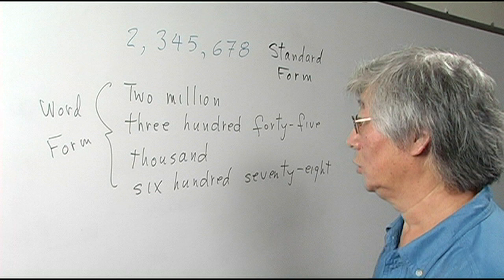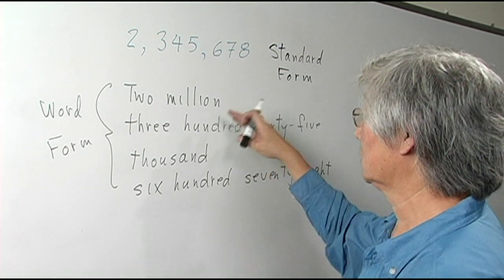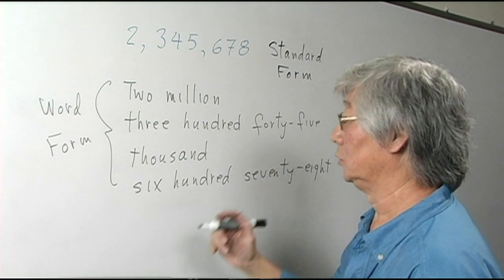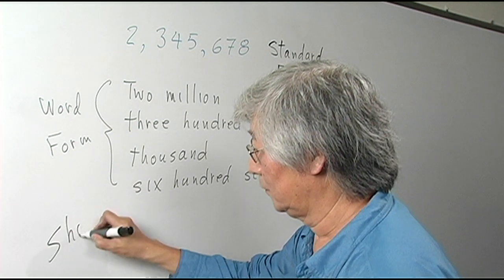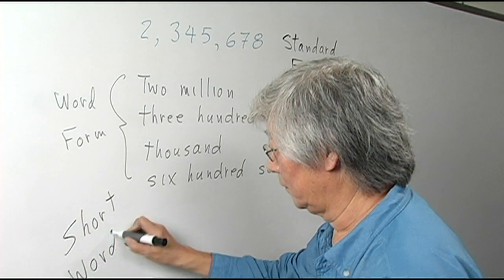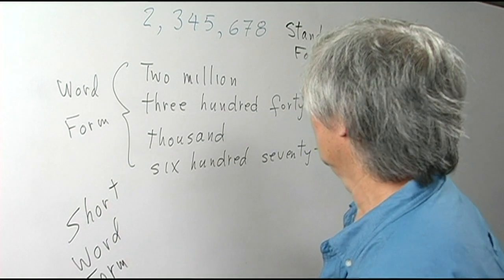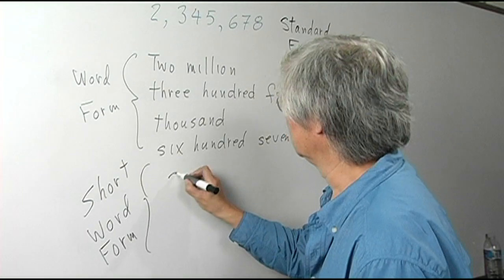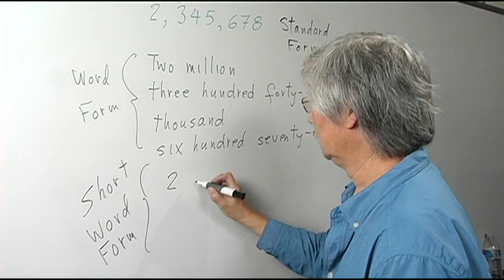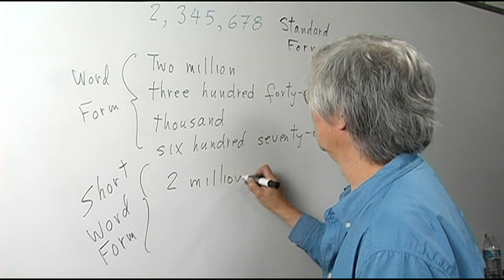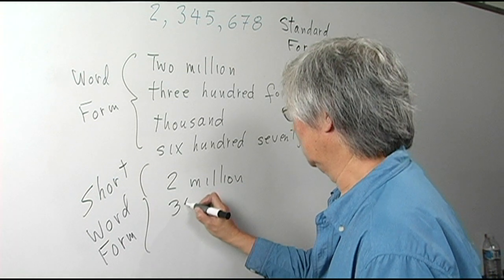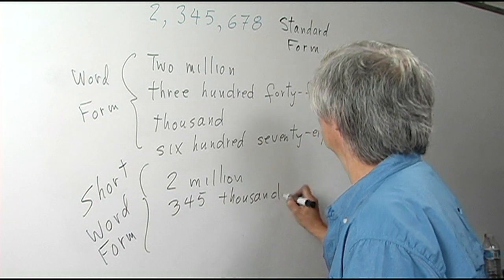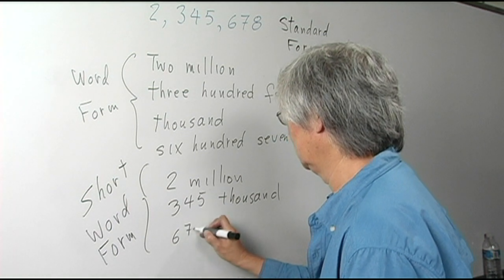Now, we have what's known as the short word form, which contracts this information and still gives you the value of this number. This is called a short word form. And what we're doing is basically taking some shortcuts. We're going to use numerals again: two million, three hundred forty-five thousand, six hundred and seventy-eight.